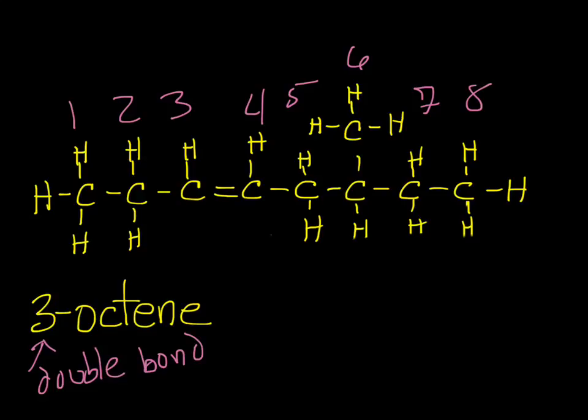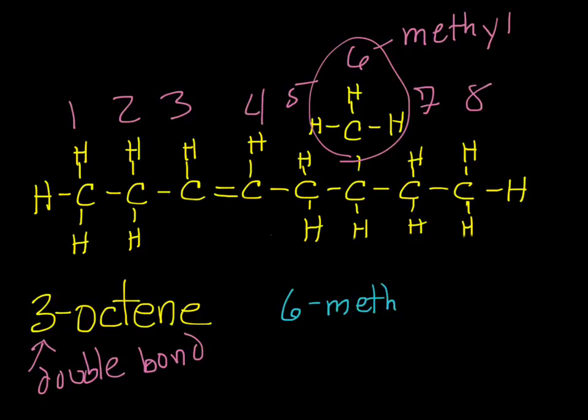All right, and then we've got a branch here at carbon number six. And this branch has only one carbon, which makes the prefix meth, and it's a branch so its ending is -yl, on carbon number six. So now the final name of this structure is going to be 6-methyl-3-octene.